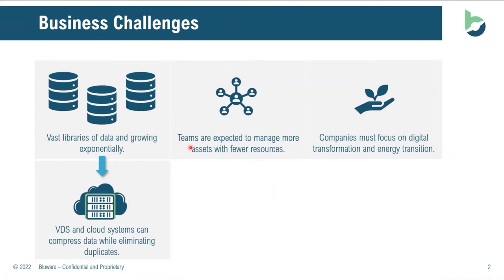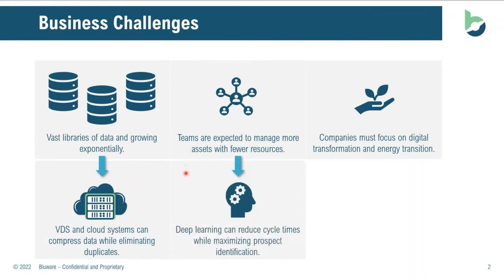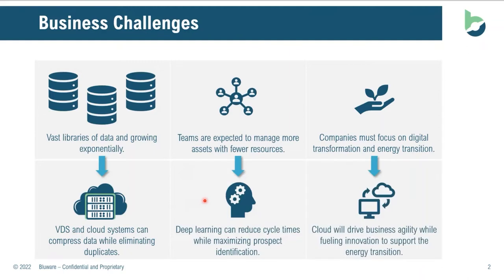We also see that teams are expected to manage more assets with fewer resources, and so many evolving technologies today are enabling us to leverage deep learning to help reduce cycle times and really maximize prospect identification. Companies must now focus on both the digital transformation as well as the energy transition. Utilizing the combination of VDS and deep learning, this can provide a more agile way in the methods that we work. The cloud will help drive business agility while really fueling innovation to support this energy as well as this digital transformation.